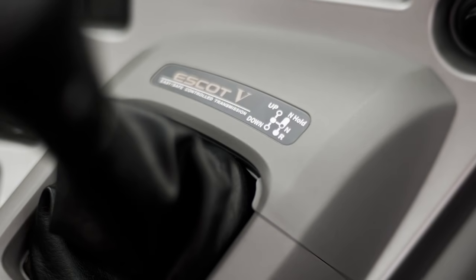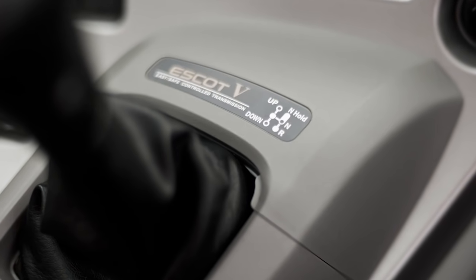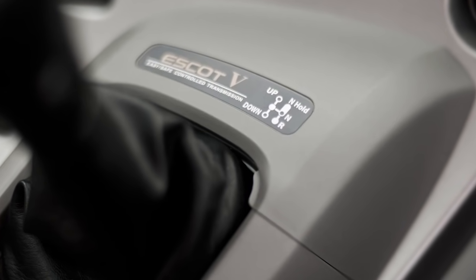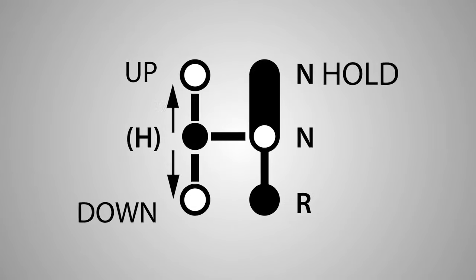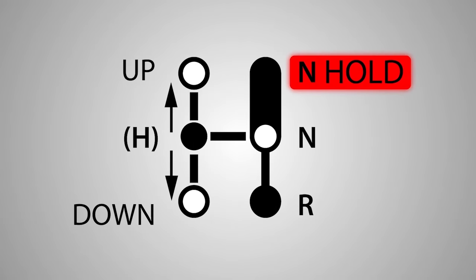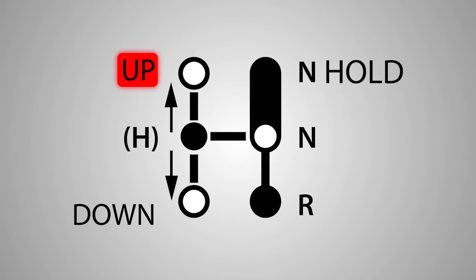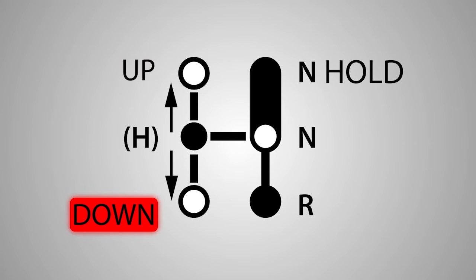The Escort 5 uses the same shift pattern as previous generation Escort transmissions, namely neutral hold, also known as park, neutral, reverse, forward up, and backward down sequential shifting.